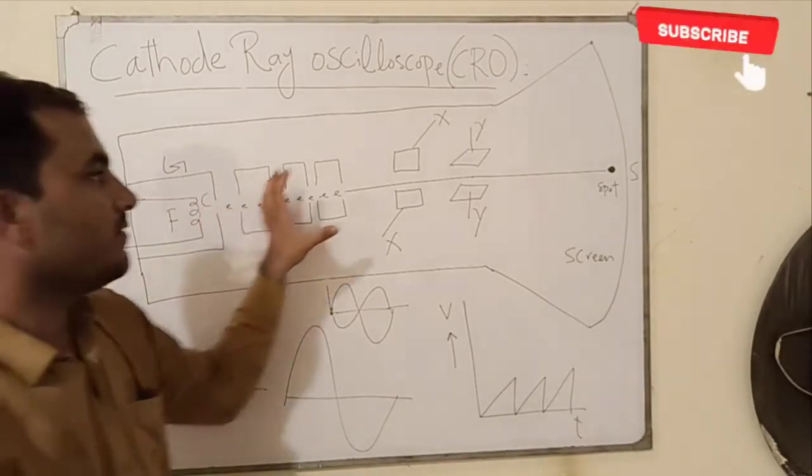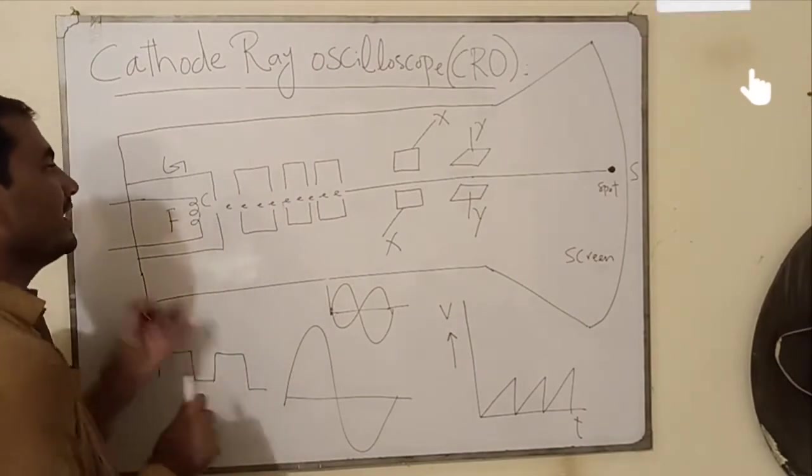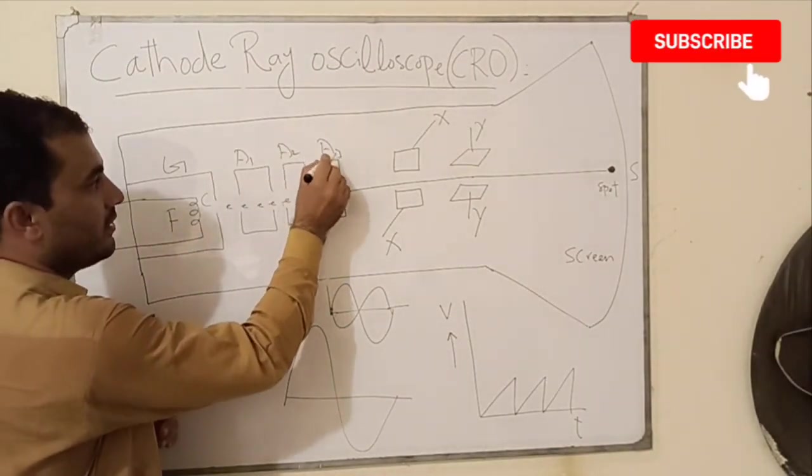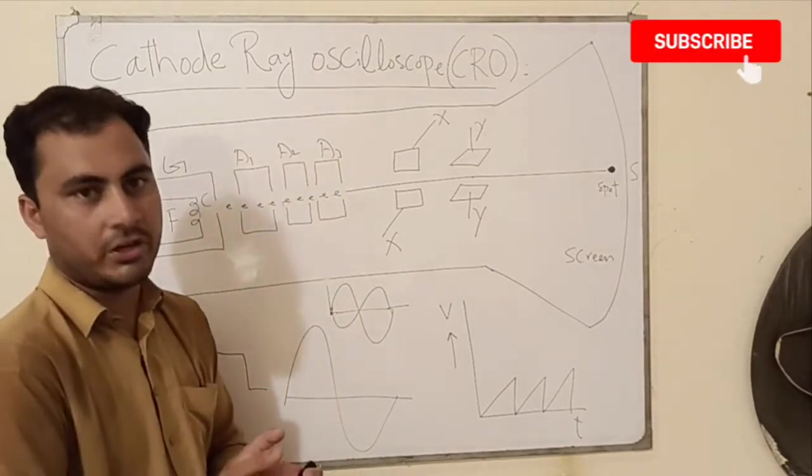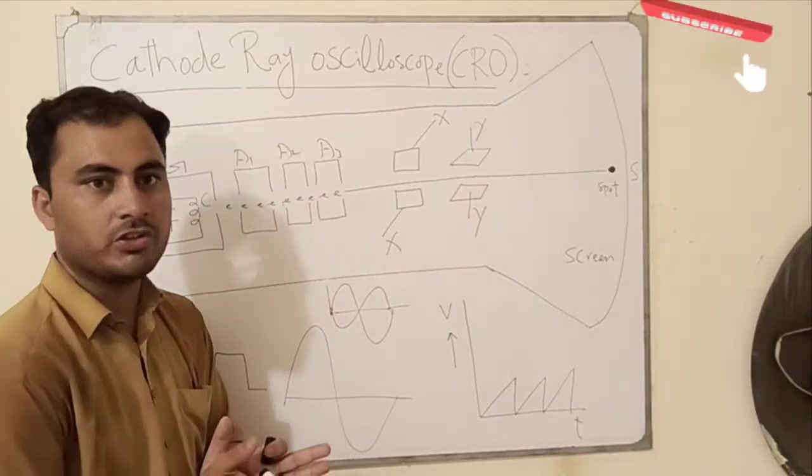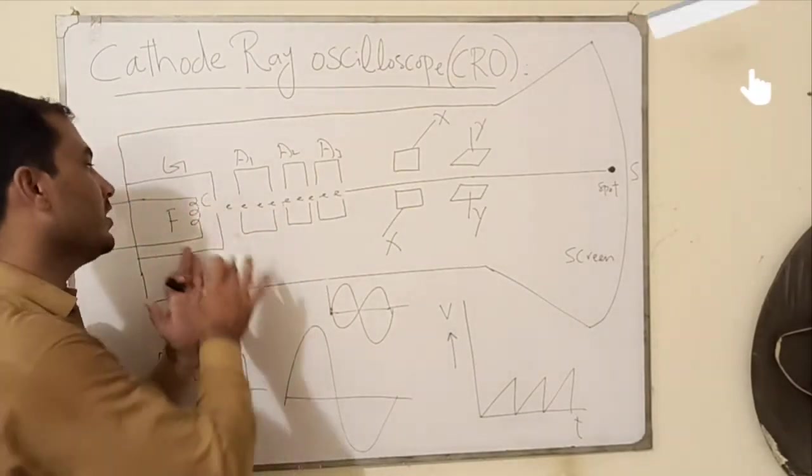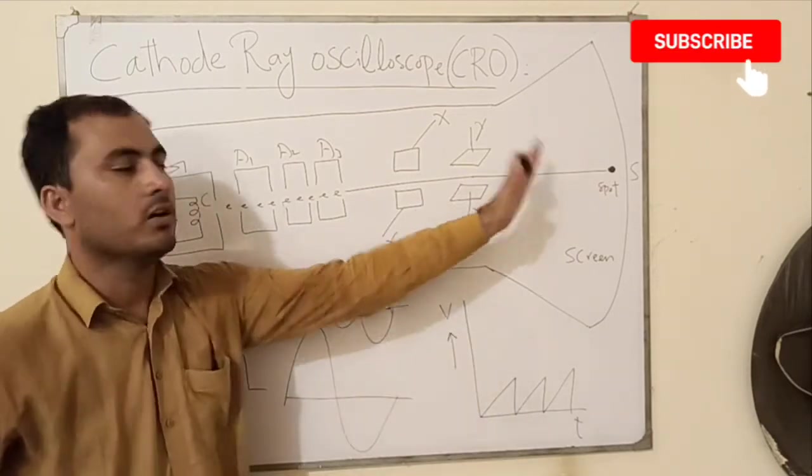Now in order to focus their beam on the screen we use here anodes A1, A2, A3. Basically these anodes have an accelerating potential because anode is positively charged plate and electrons are negatively charged. So that's why it attracts electrons or accelerates the electrons towards the screen.